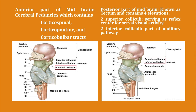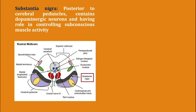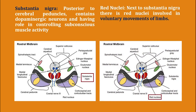The posterior part of midbrain is known as the tectum, and it contains four elevations: two superior colliculi, serving as reflex centers for several visual activities, and two inferior colliculi, which are part of the auditory pathway. Talking about nuclei present in midbrain: substantia nigra, which is present posterior to cerebral peduncles and contains dopaminergic neurons, having a role in controlling subconscious muscle activity. Another is the red nuclei, which is present next to substantia nigra and is involved in voluntary movements of limbs.